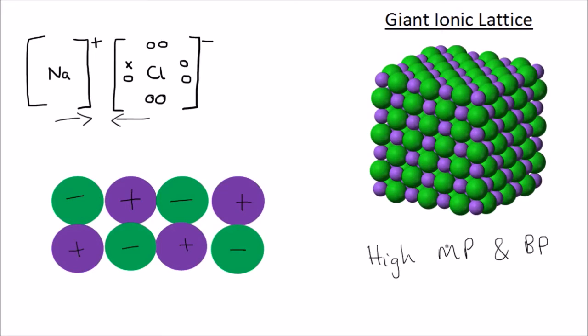In solid form ionic compounds don't conduct electricity because the ions are held in place and can't move, but if we melt it the ions will be free to move and a molten ionic compound can therefore conduct electricity.